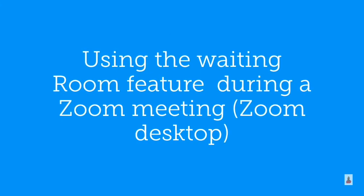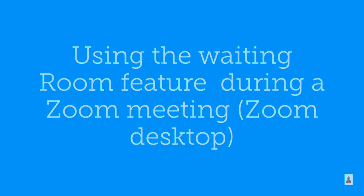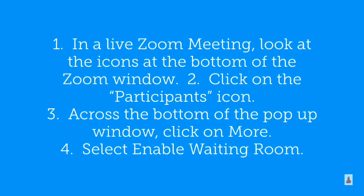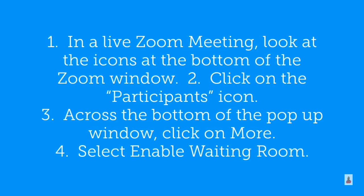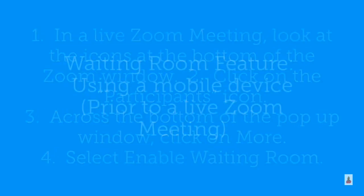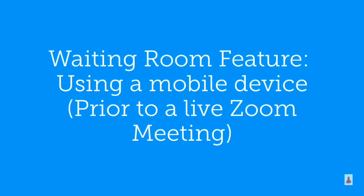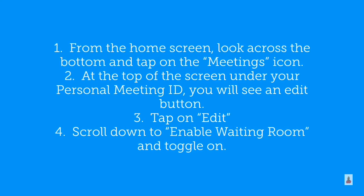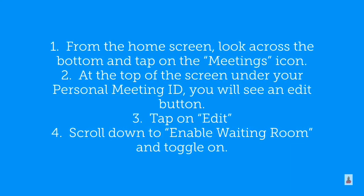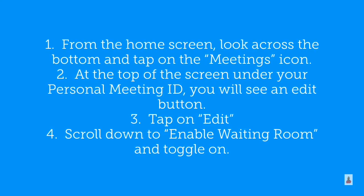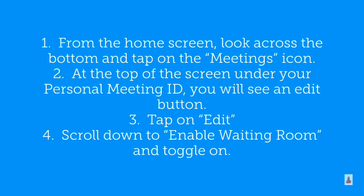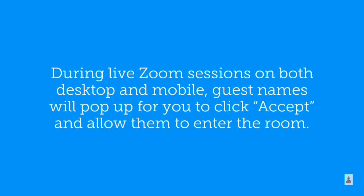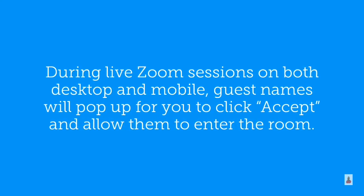After enabling the waiting room feature, you can choose to send all participants to the waiting room when they join, or to send only guest participants — which are external accounts — to the waiting room. You can also allow other internal participants to admit guests from the waiting room if the host is not yet in the meeting. During a live Zoom meeting on desktop, look at the bottom icons, click on participants, then click more, and select enable waiting room. On a mobile device prior to a meeting, from the home screen tap the meetings icon, then under your personal meeting ID tap edit, scroll down to enable waiting room and toggle it on. During live Zoom sessions on both desktop and mobile, guest names will pop up for you to click accept and allow them to enter the room.